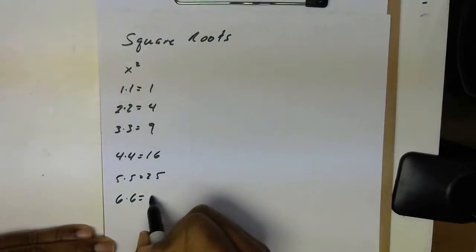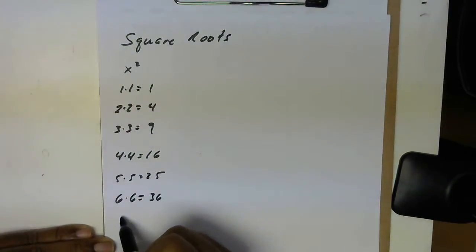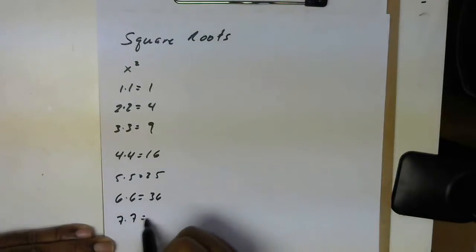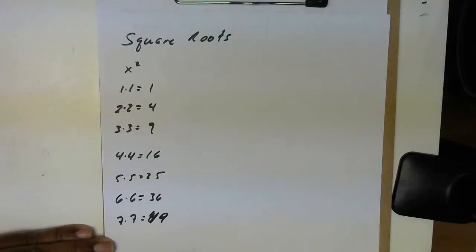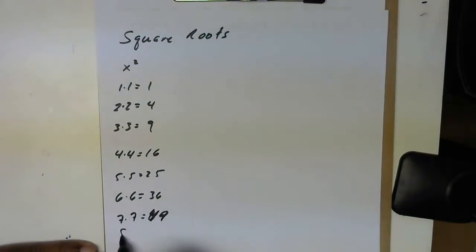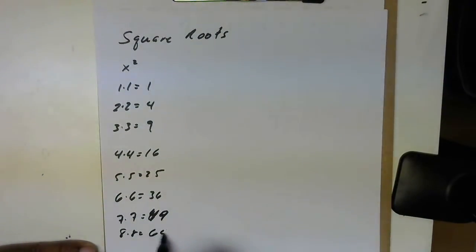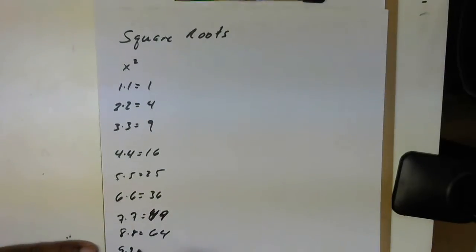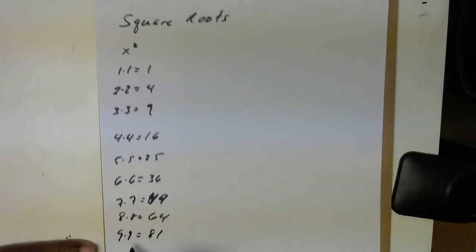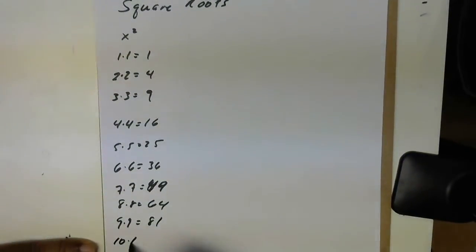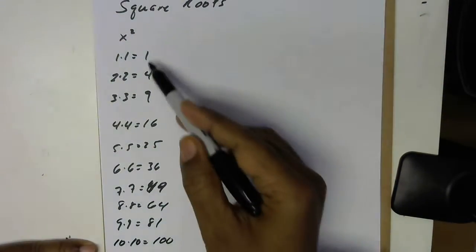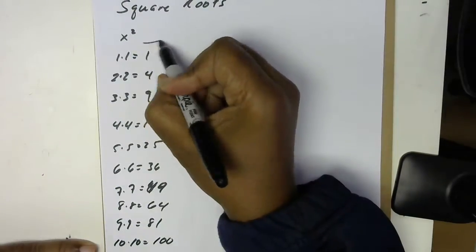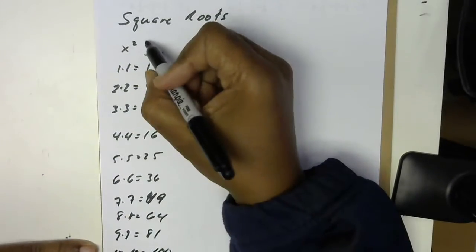6 times 6, 36 — that's a square. 7 times 7 is 49. 8 times 8, 64. 9 times 9, 81. And 10 times 10 — 100 is a perfect square. So all of these numbers over here are perfect squares.